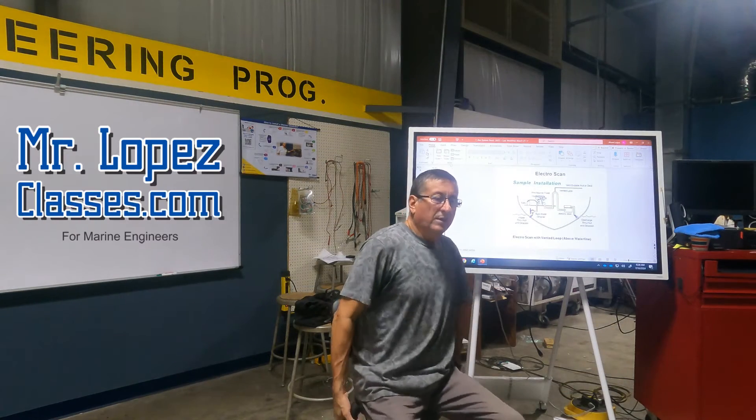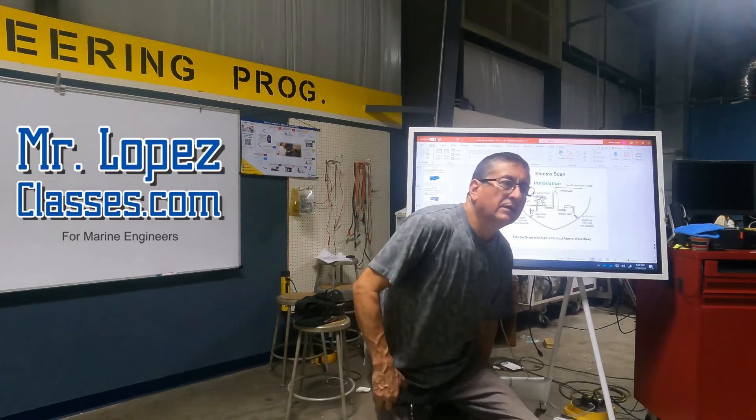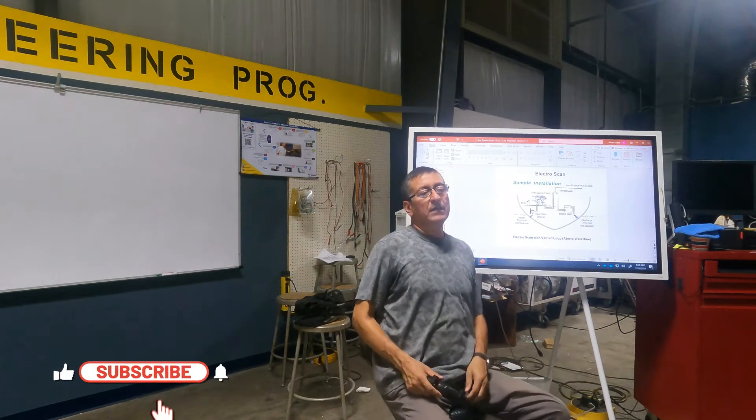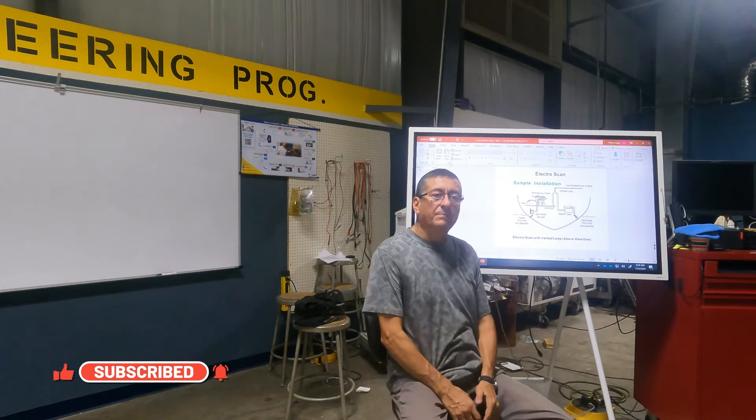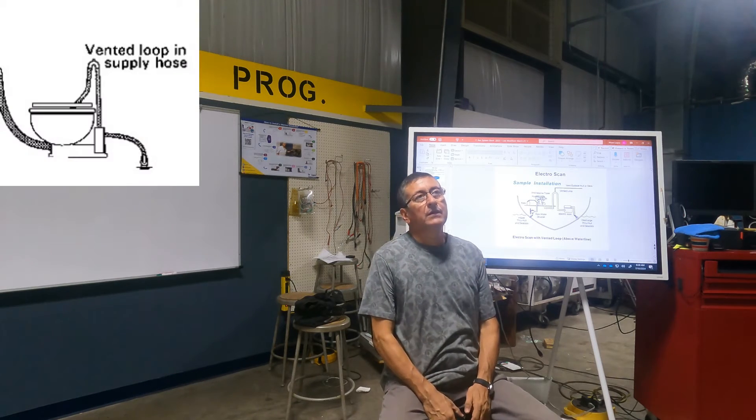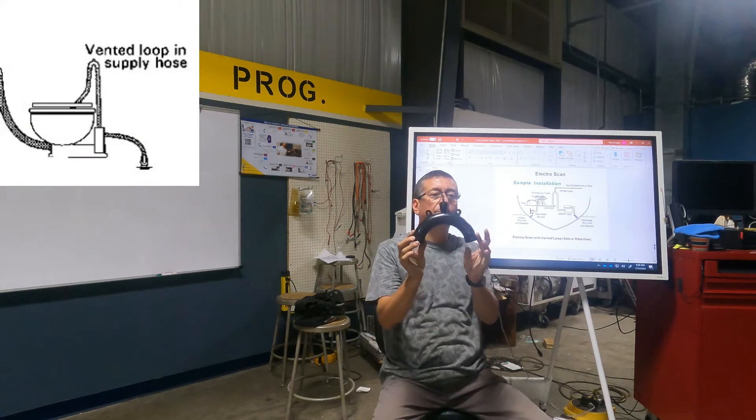Now we are going to talk about the difference between anti-siphon device, vented loop device, and a P-trap. The P-trap. This is a vented loop. You see?